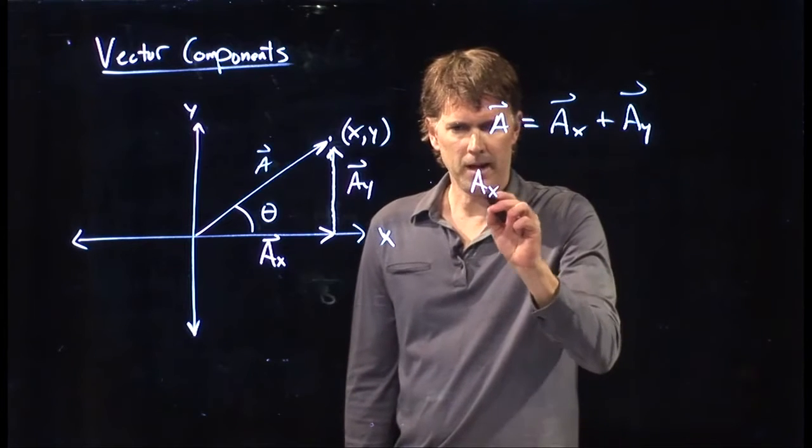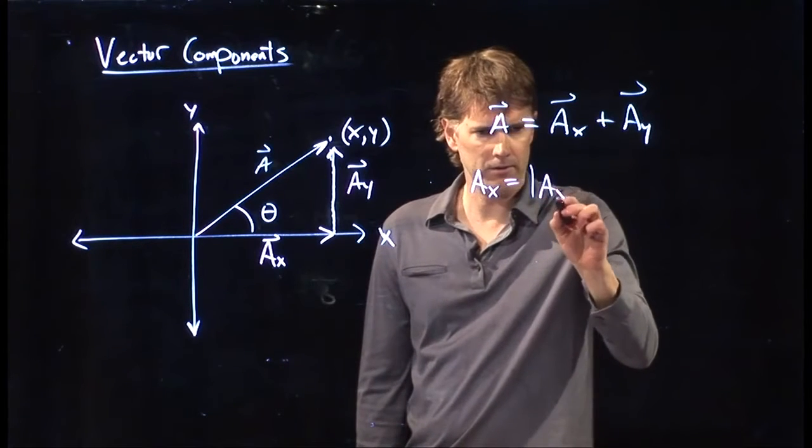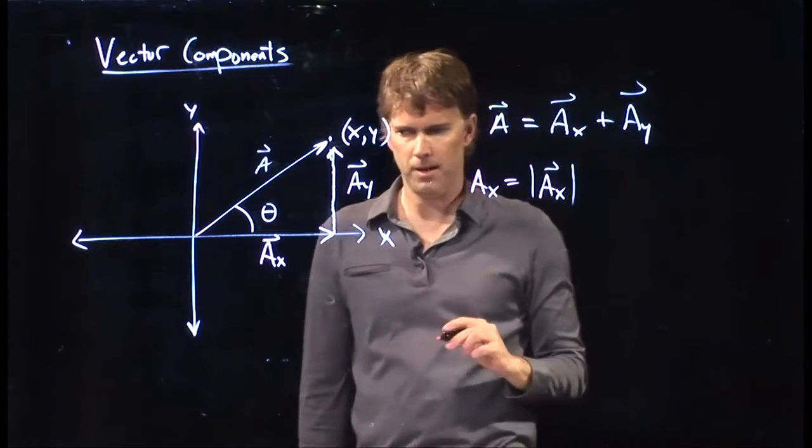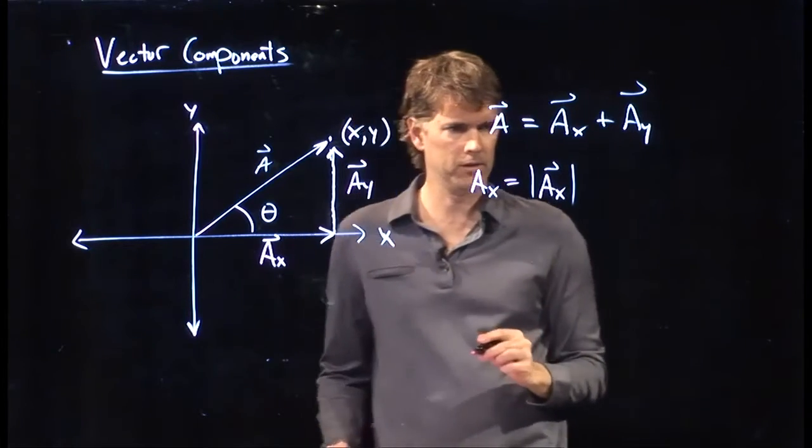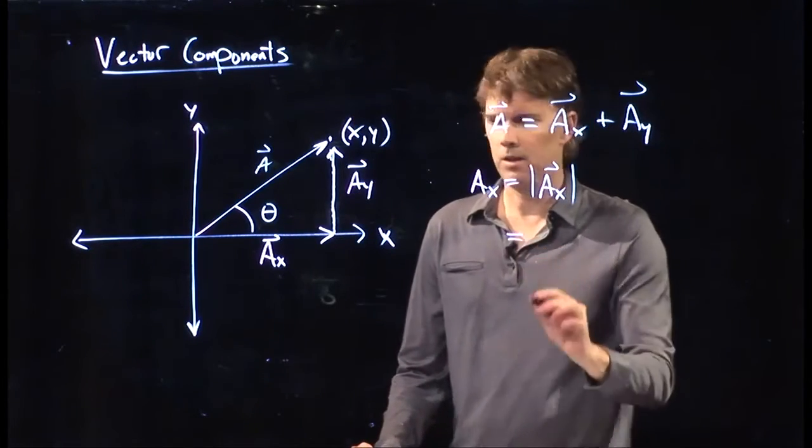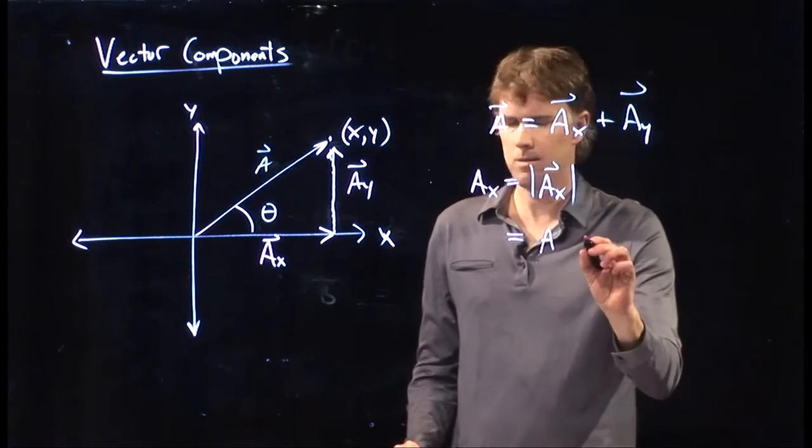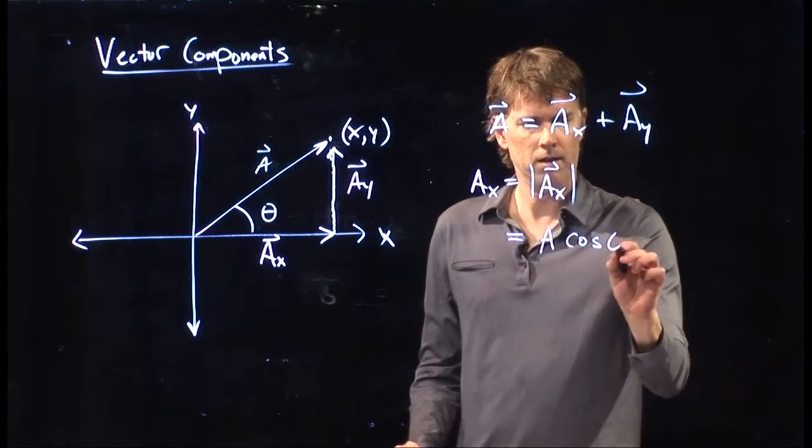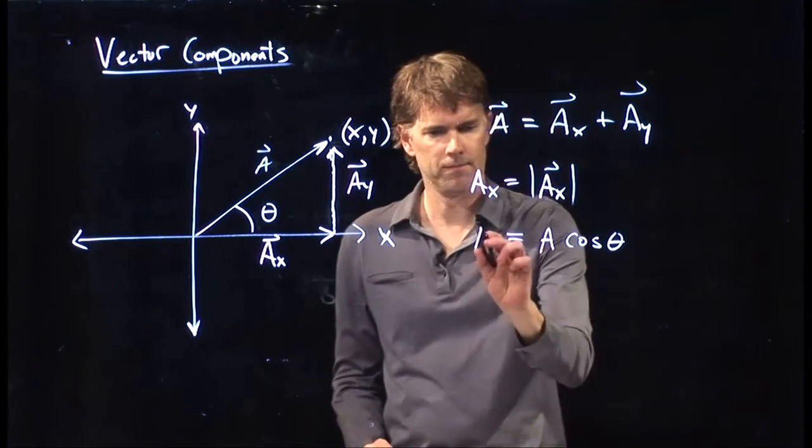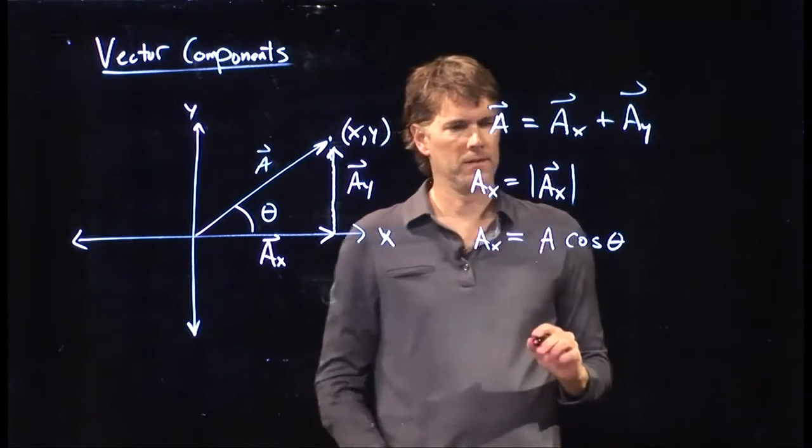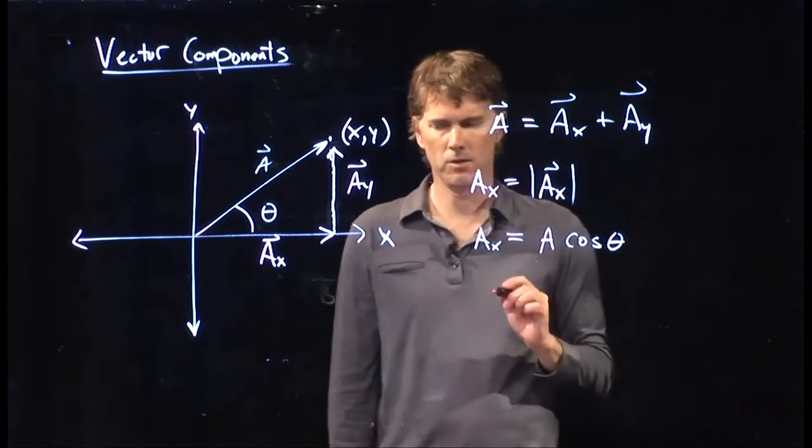A_x is the magnitude of A_x. How long is this? That is the hypotenuse of the triangle, which is A times the cosine of theta. So A_x equals A cosine theta.